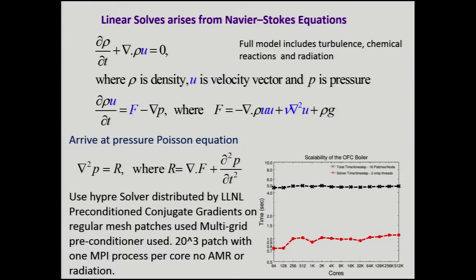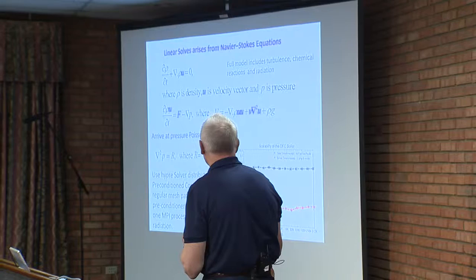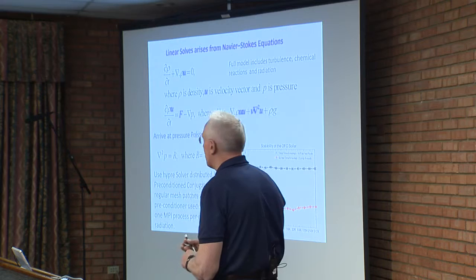I think our memory usage is just so low that we can actually get away with one MPI process. We have pretty fine patches — 20-cubed on one per MPI process — which I think is why it works.